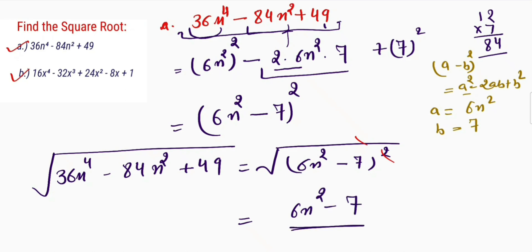So in this question we used this identity to find the square root of the algebraic expression. What about the second question? Are we able to find its square root using any of the identities like a plus b whole square, a minus b whole square, a plus b plus c whole square, or other identities? This is not clear, so to solve these types of questions we need to find a rule. I will discuss that rule step by step.